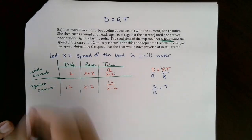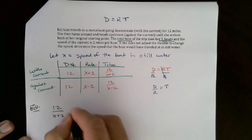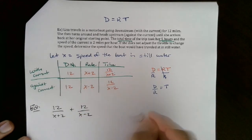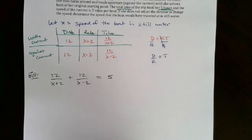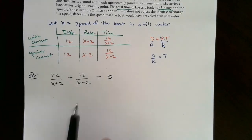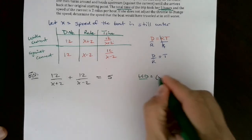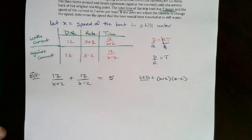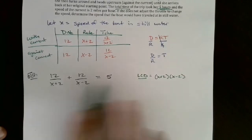The equation is 12/(x + 2) plus 12/(x − 2) equals 5. This is a rational equation, and we've solved these before. To solve a rational equation, you clear fractions first by finding the LCD. The LCD for this entire equation is (x + 2)(x − 2), since both factors must be present. Multiply every single term by the LCD, including the 5, to keep the equation balanced.